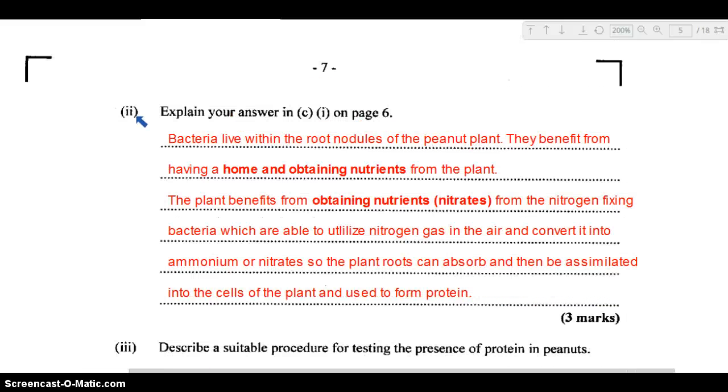Part two: explain your answer. The relationship is mutualistic, a mutualism relationship. The bacteria live within the root nodules of the peanut plant, so they benefit from having a home, a shelter, a place to live, and they can obtain any nutrients available from the plant. That's how the bacteria are benefiting. The plant benefits from obtaining the nutrients, especially the nitrates in particular, from the nitrogen-fixing bacteria. These nitrogen-fixing bacteria utilize nitrogen gas from the air and convert it into ammonium or nitrates so the plants can absorb. These nitrates can be assimilated into the cells of the plant and used to form protein. This is how the plant will be able to make its own protein.